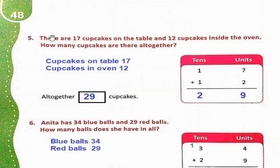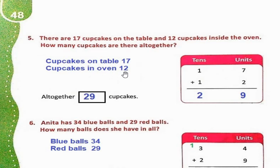Page 48, Question number 5: There are 17 cupcakes on the table and 12 cupcakes inside the oven. How many cupcakes are there altogether? Cupcakes on table: 17. Cupcakes in oven: 12. Hamen total maloom karna hai. Total ke liye hum 17 plus 12 karenge. 7 plus 2 is 9, 1 plus 1 is 2. So 29.